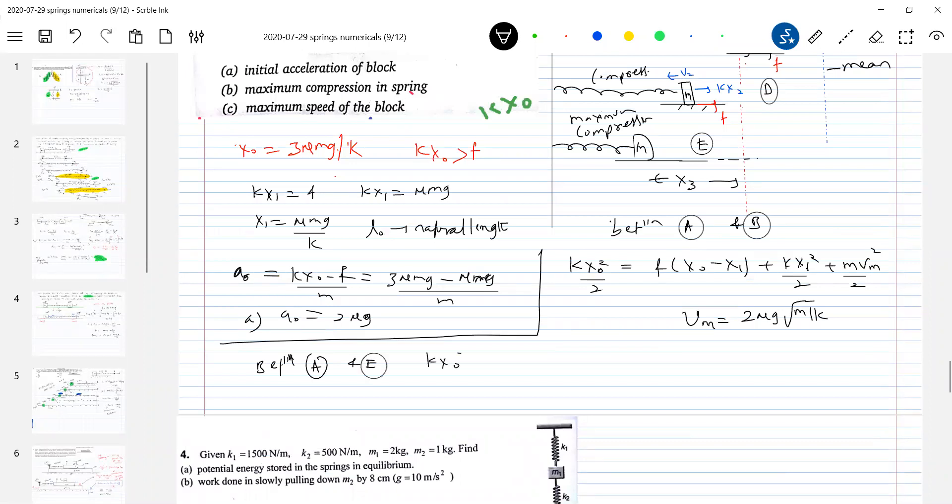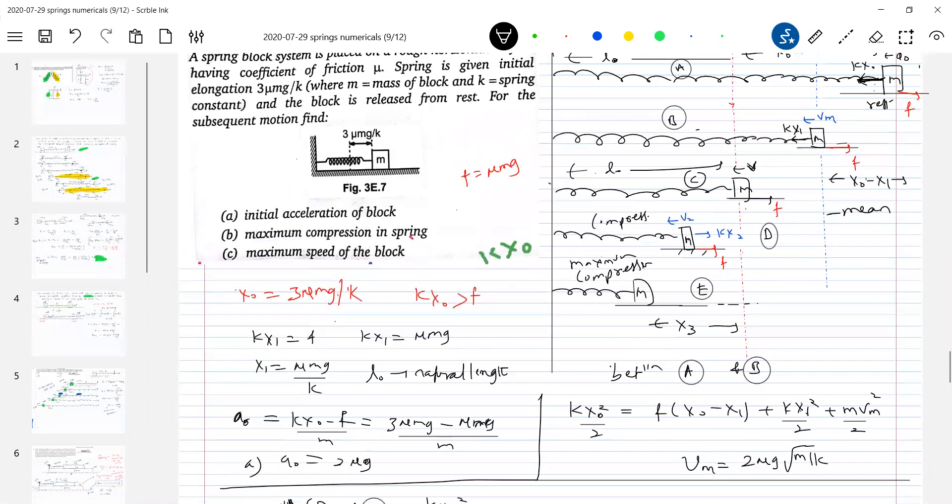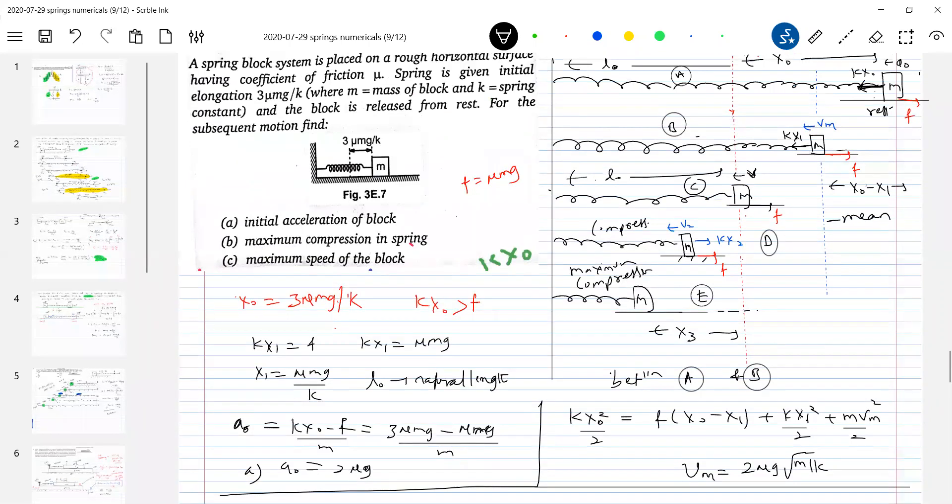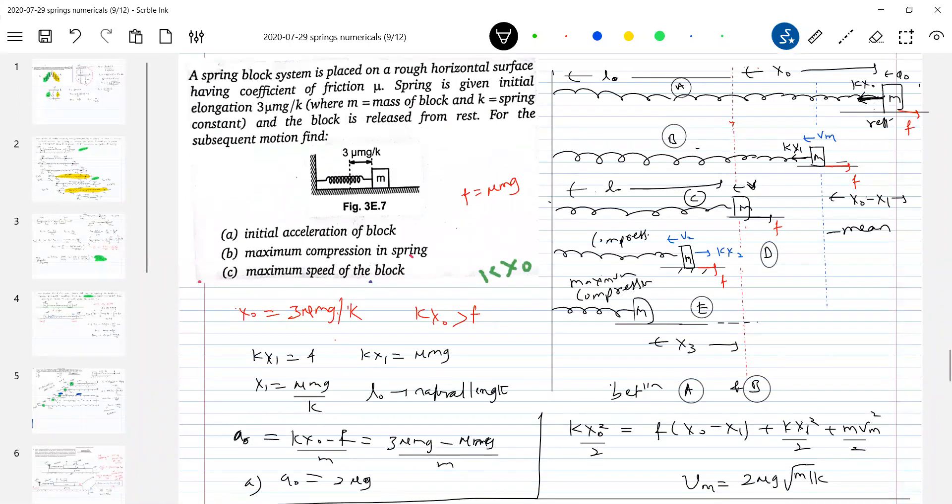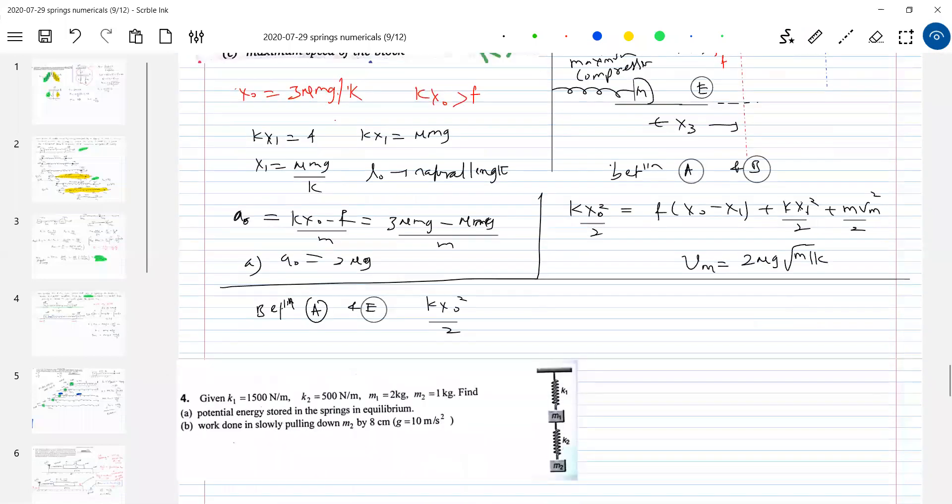And what is the initial energy? Kx0 square by 2. Then, how much of displacement the block has undergone x0 plus x3. You see that. How much of displacement here? X0. How much of displacement here? X3. And the friction does negative work. So this should be equal to, what happened to all this energy? Work done to overcome friction x0 plus x3 plus. And finally, some energy is retained in the spring.